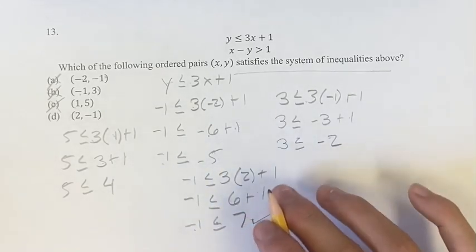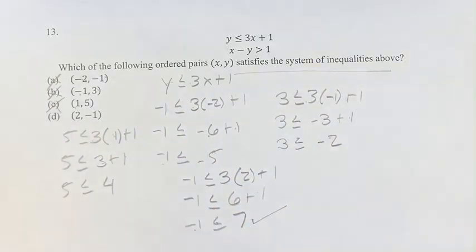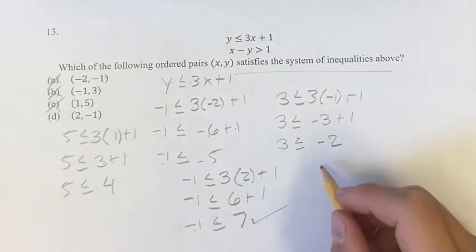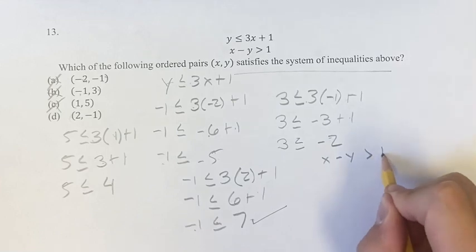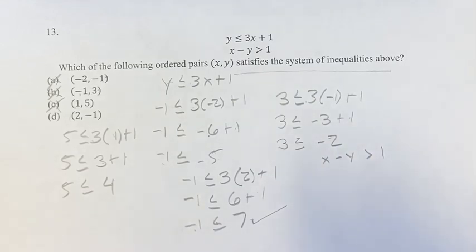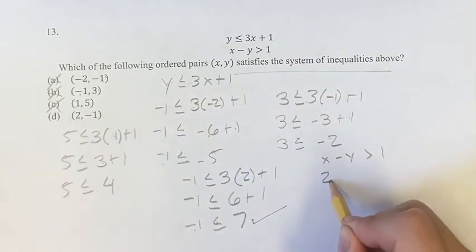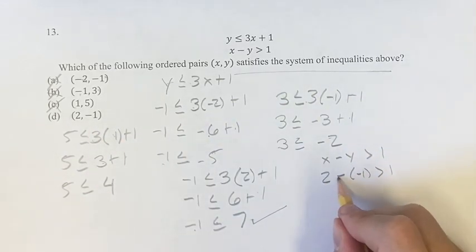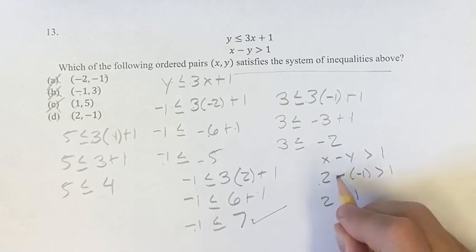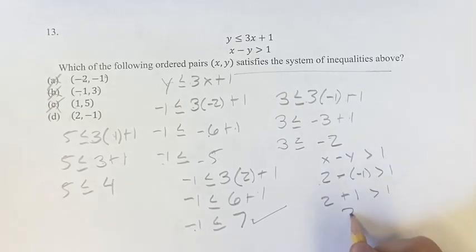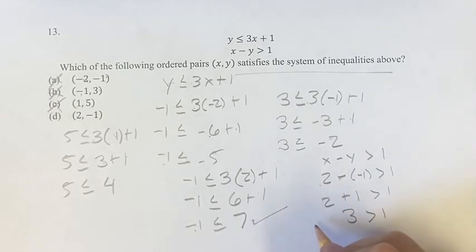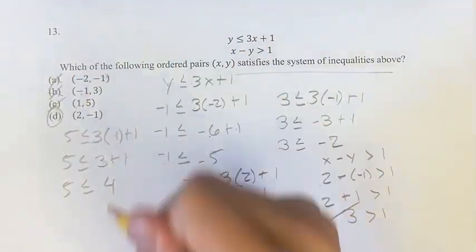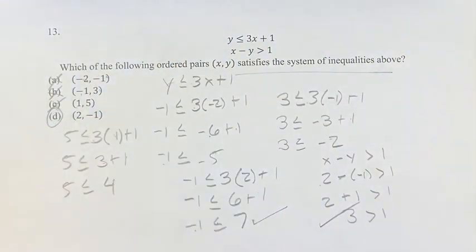We also have to test both inequalities. For the second inequality, x - y > 1: with x = 2 and y = -1, we get 2 - (-1) > 1, which is 2 + 1 > 1, so 3 > 1. It satisfies both inequalities, which confirms that D is the final answer.